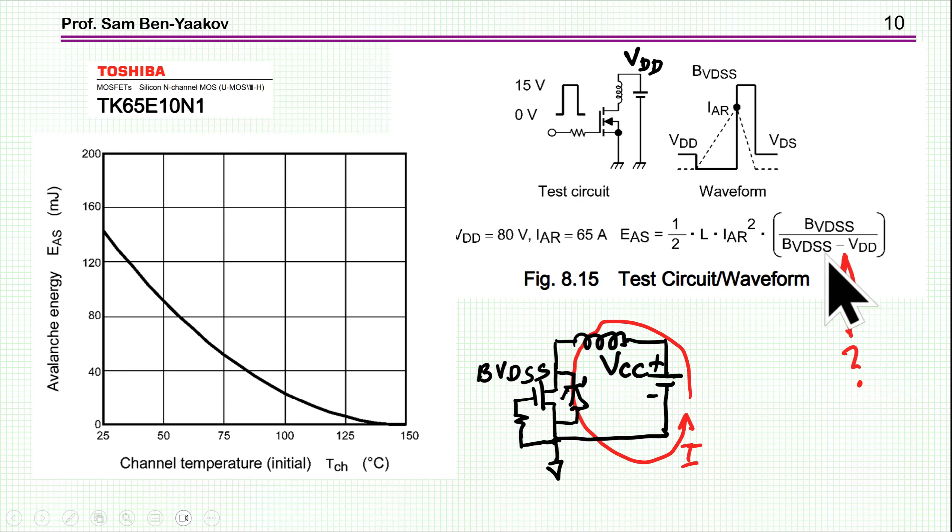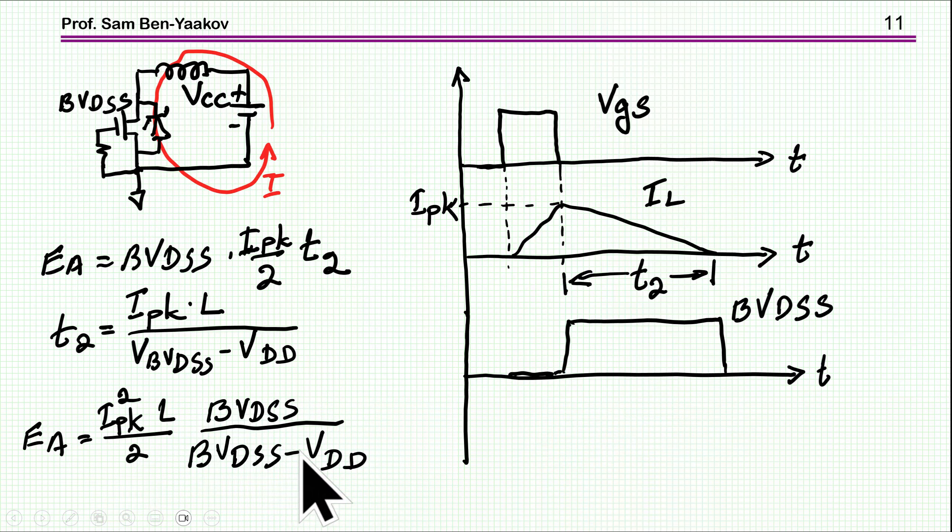You'd assume that if the voltage VCC is close to the breakdown, the energy will be lower. But that's the fact. Let's develop this equation given by Toshiba. The amount of energy absorbed by the transistor is the breakdown voltage times the charge through it. The charge is I peak over 2, the average, times T2. This is the charge times voltage is energy.